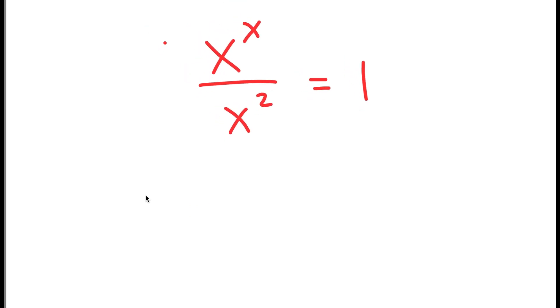Now, I can use an important property of exponents that states that if I have something in the form a to the power of m over a to the power of n, this is equal to a to the power of m minus n.